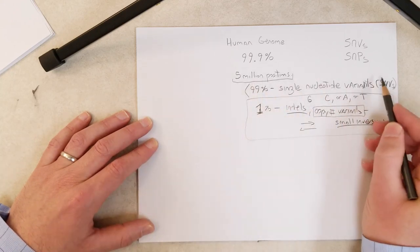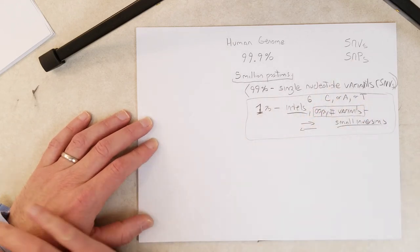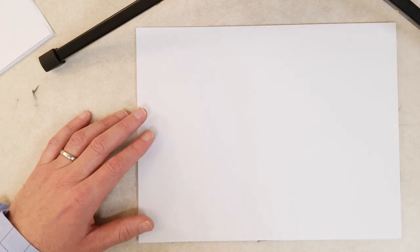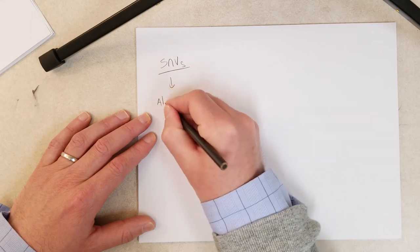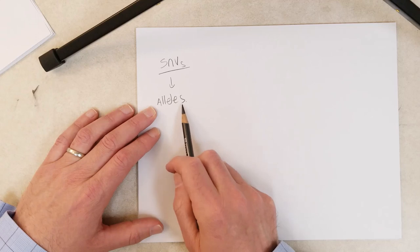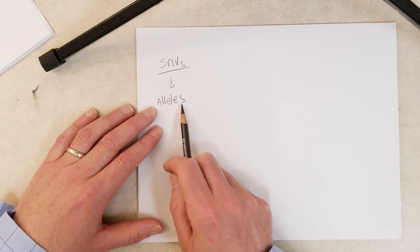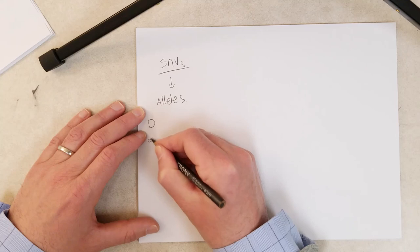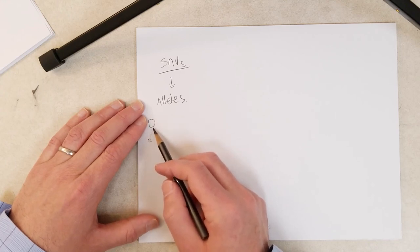We're going to focus mostly on single nucleotide variants, and more importantly, single nucleotide polymorphisms. With SNVs we can have different alleles — a term we've used before to refer to different versions of the same gene, like Mendel's pea plants with the big D allele for tall plants and little d for dwarf plants.